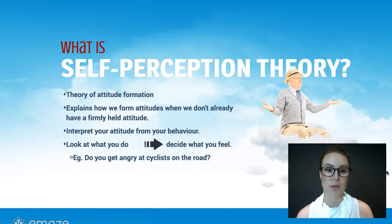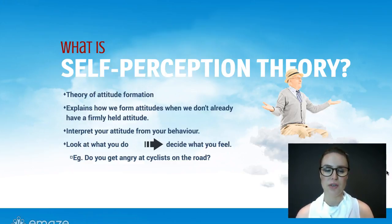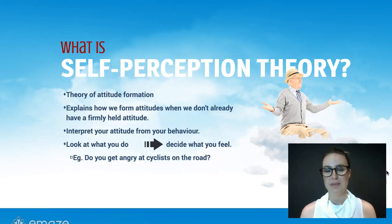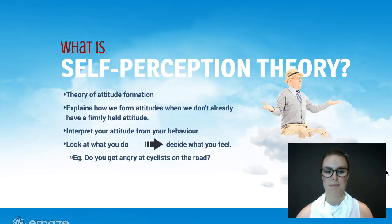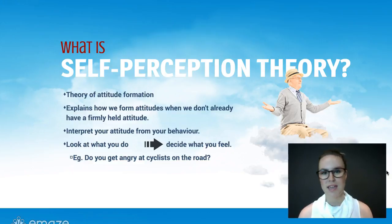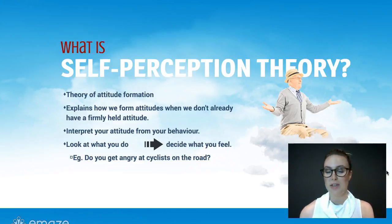The next theory is self-perception theory. Where cognitive dissonance was a theory about attitude change, this is a theory about how attitudes are formed. It explains how we form an attitude in a situation where we don't already have a firmly held attitude. What you do is look at your behaviour and from there interpret your attitude — you look at what you do and then decide what you feel. Going back to the cyclist: think about when you're in the car and you see a cyclist. Do you get angry or frustrated? Or are you happy to see them, thinking good on them, they're being healthy? You might not realise you have an attitude, so you'd look at your behaviour and then determine whether your attitude is positive or negative.